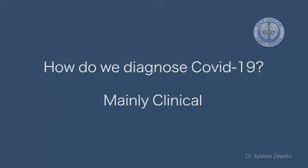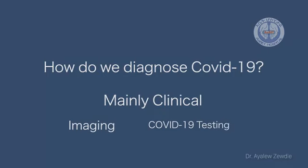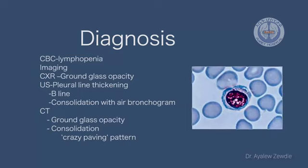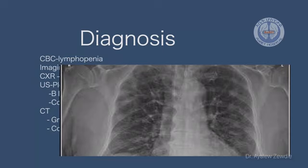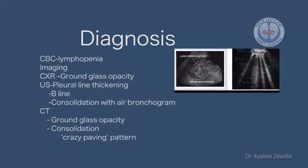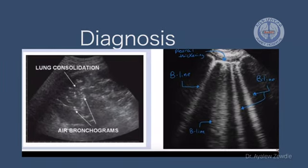Diagnosis is mainly clinical — clinical history. You should have a detailed travel history or contact history with infected people. Imaging can be used as supportive. COVID-19 testing should be done for every suspected patient. Diagnostically, patients would have lymphopenia on CBC. Chest X-ray can show ground-glass opacities, and ultrasound can show pleural line thickening or B-lines, consolidation with air bronchogram.